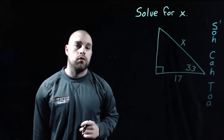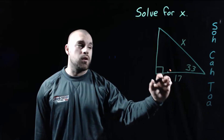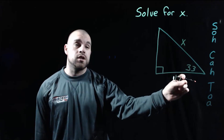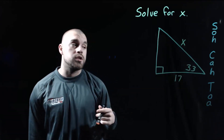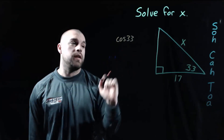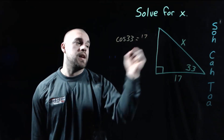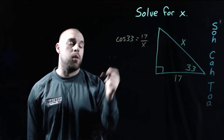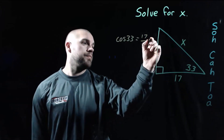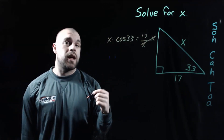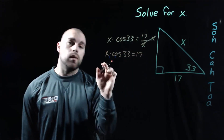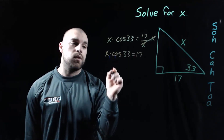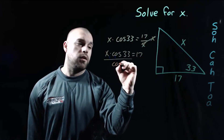In this example, we've got a 33-degree angle down at the bottom right-hand corner. 17 is the horizontal side and X is our hypotenuse. Since we've got the adjacent side and the hypotenuse, we're going to use a cosine equation. So we do the cosine of our angle equals the adjacent side 17 over the hypotenuse X. Again we're dividing by X, so we multiply both sides by X, giving us X times the cosine of 33 equals 17. There's one more step — we divide both sides by the cosine of 33.